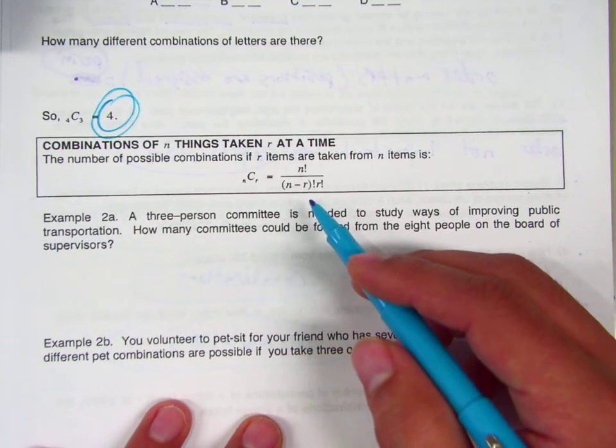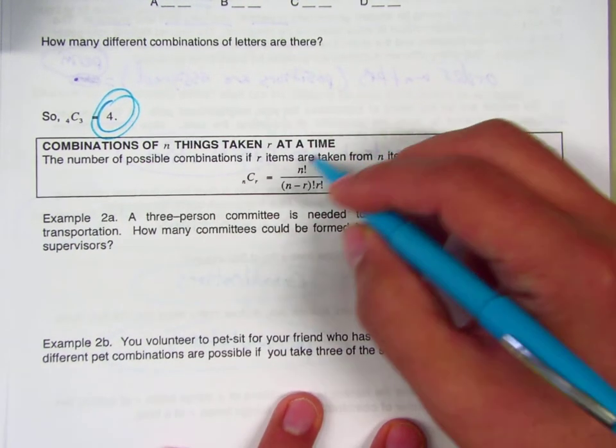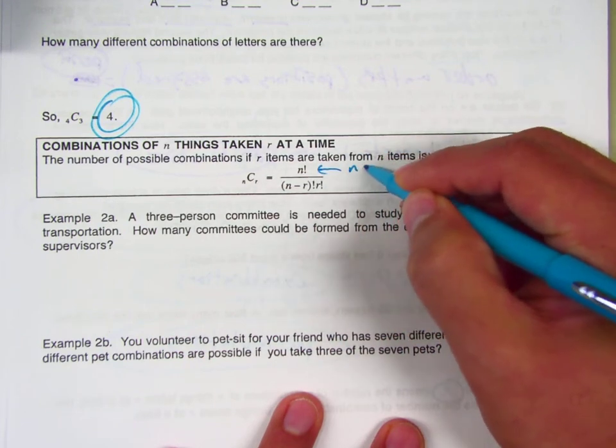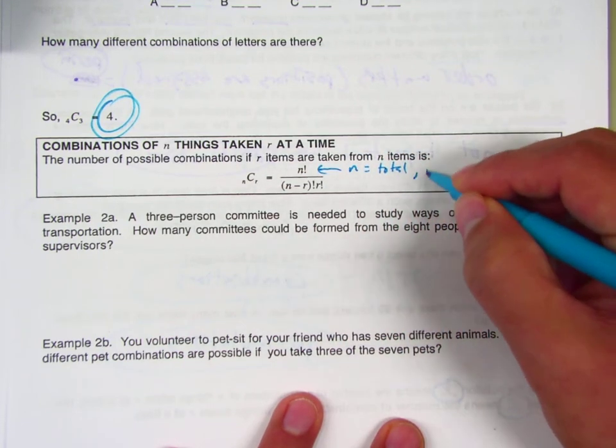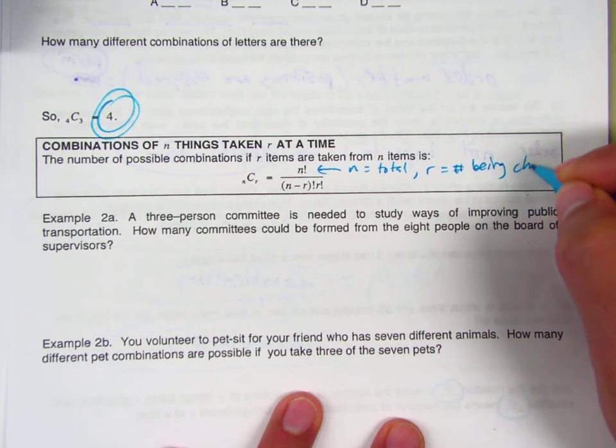And now here's the formula for a combination. Here's how we figure it out. This formula: N is the total, and R is the number being chosen or selected.